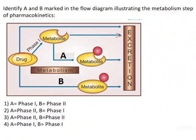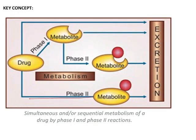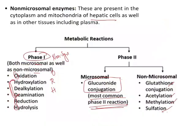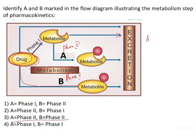Coming back to the question: the drug is already undergoing phase 1 metabolism, so after that it should go to phase 2. Therefore A is phase 2. Then again, this is already metabolized, so B is also phase 2. Both A and B are phase 2, and then it goes to excretion. Remember: phase 1 is the non-synthetic phase and phase 2 is the synthetic phase. The answer is A is phase 2 and B is also phase 2.